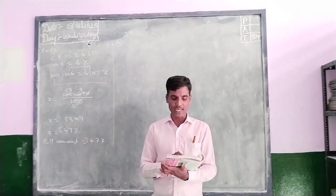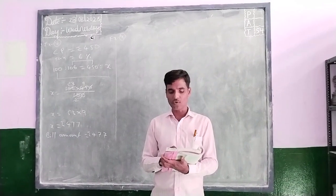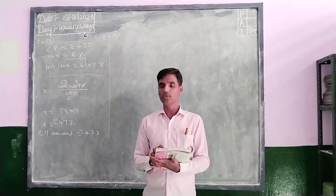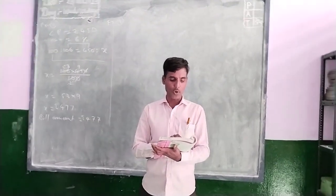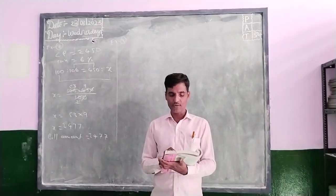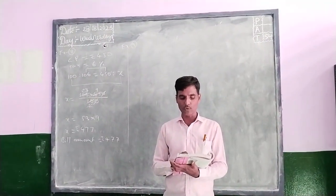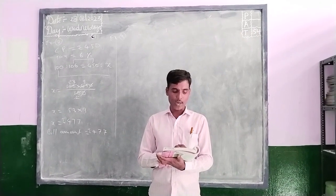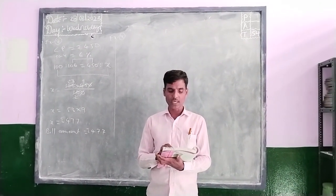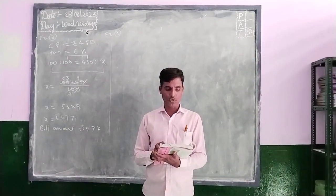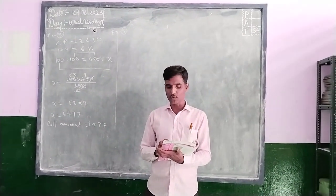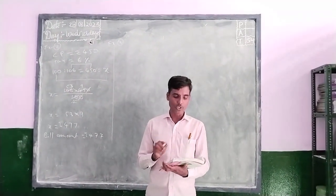Here's the given bill: Rice 10 kg, 1 kg equals 100 rupees, amount equals 1000. Washing powder 3 kg, per kg amount equals 100 rupees, so total 300. Pulses 6 kg, each kg equals 150, total 900. Total amount equals 2200.